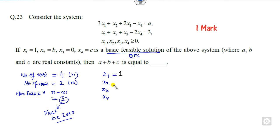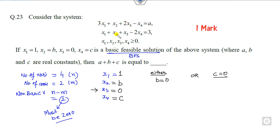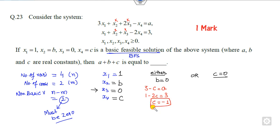The values given are: x1 = a, x2 = b, x3 = c, x4 = 0. Since 2 variables must be 0, either b = 0 or c = 0. If b = 0: substituting into the constraints gives x2 = 0, x3 = 0, so 3 − c = a from the first equation and 1 − 2c = 3 from the second, giving c = −1. Substituting back gives a = 4. But x4 must be ≥ 0 and c is negative, so this case is not possible.